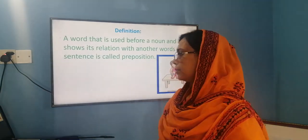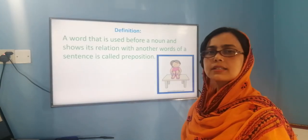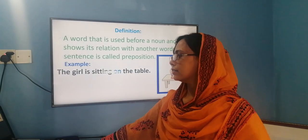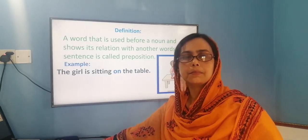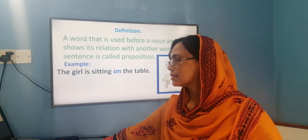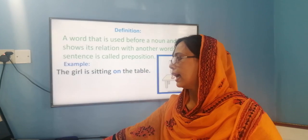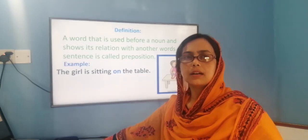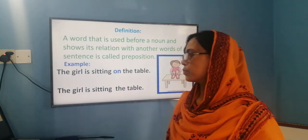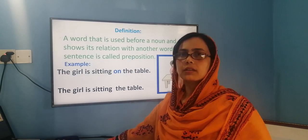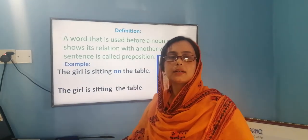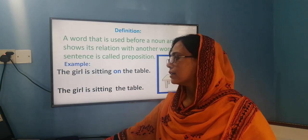Let's understand this with an example. What can you see in the picture? There is a girl. The girl is sitting on the table. Here, 'on' is a preposition because after 'on' there is the word 'table,' and table is a noun. This table has a link with the sitting arrangement of the girl. But if we write the sentence as 'the girl is sitting the table,' we are not able to get the relationship — so it is a wrong sentence.